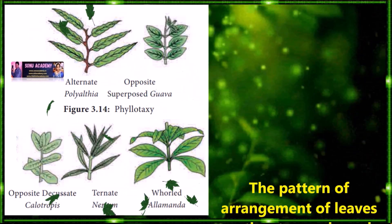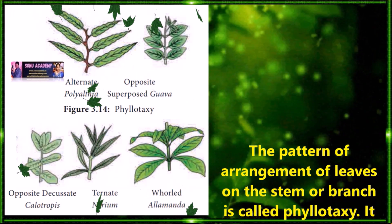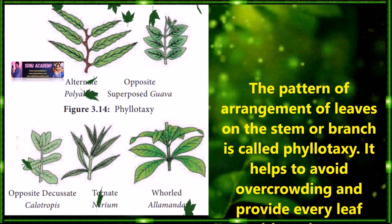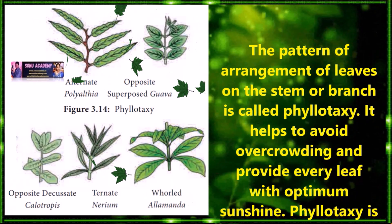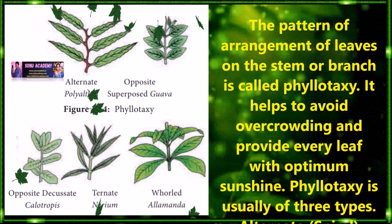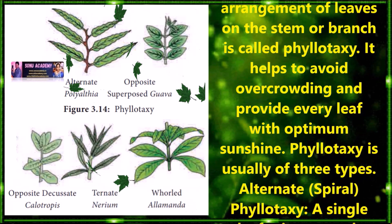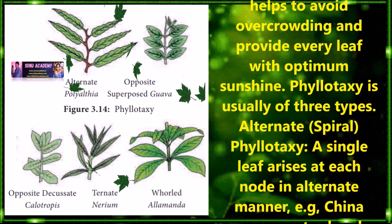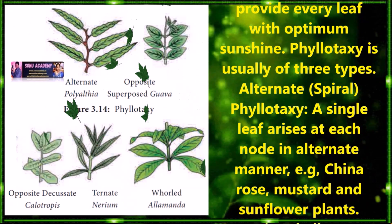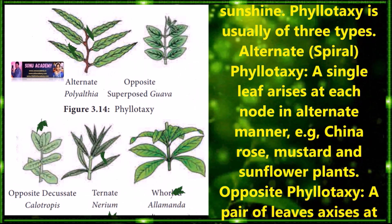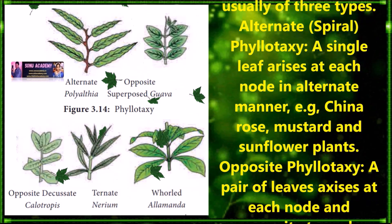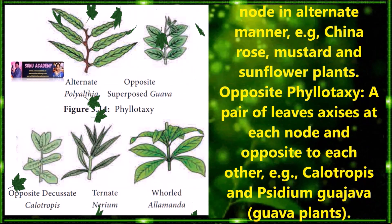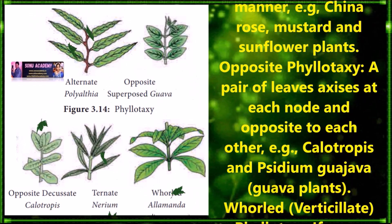Phyllotaxi: the pattern of arrangement of leaves on the stem or branch is called phyllotaxi. It helps to avoid overcrowding and provides each leaf with optimum sunlight. Phyllotaxi is usually of three types: alternate phyllotaxi, opposite phyllotaxi, and whorled phyllotaxi. In alternate or spiral phyllotaxi, a single leaf arises at each node in an alternate manner. Examples are china rose, mustard, and sunflower plants.